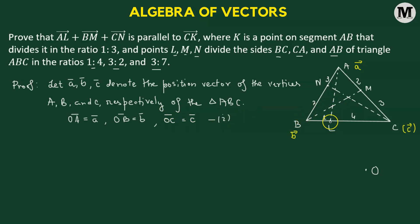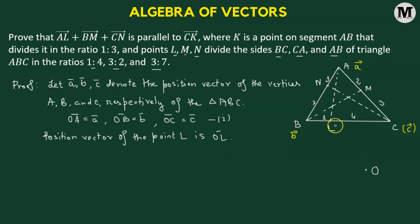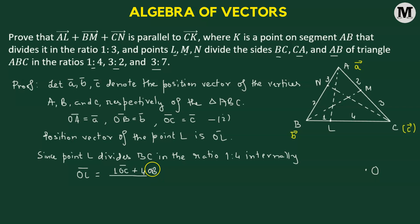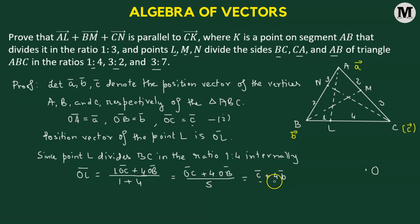We can define the position vector of points L, M, and N. The position vector of point L will be given by OL vector. Since L divides BC in the ratio 1 to 4 internally, we apply the section formula: OL vector equals 1 times OC vector plus 4 times OB vector, divided by 1 plus 4. That gives us C vector plus 4B vector divided by 5. We'll label this as number 2.